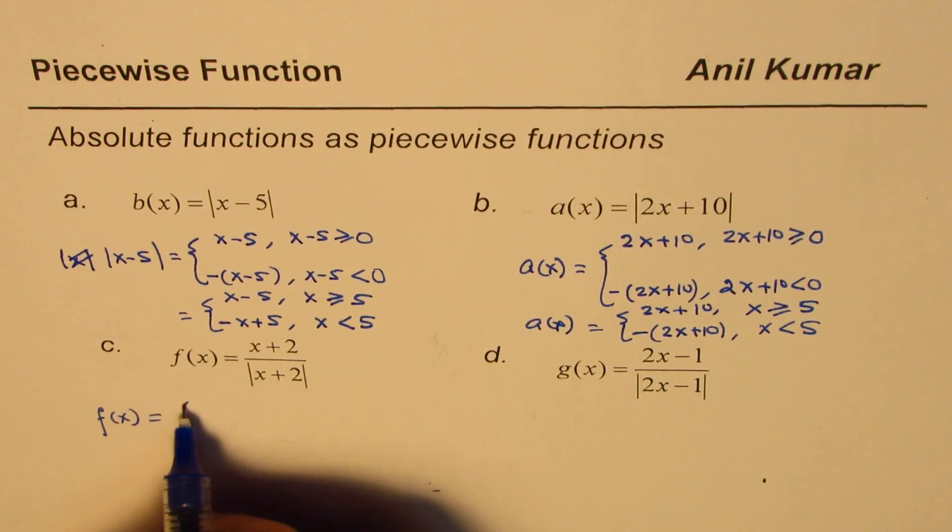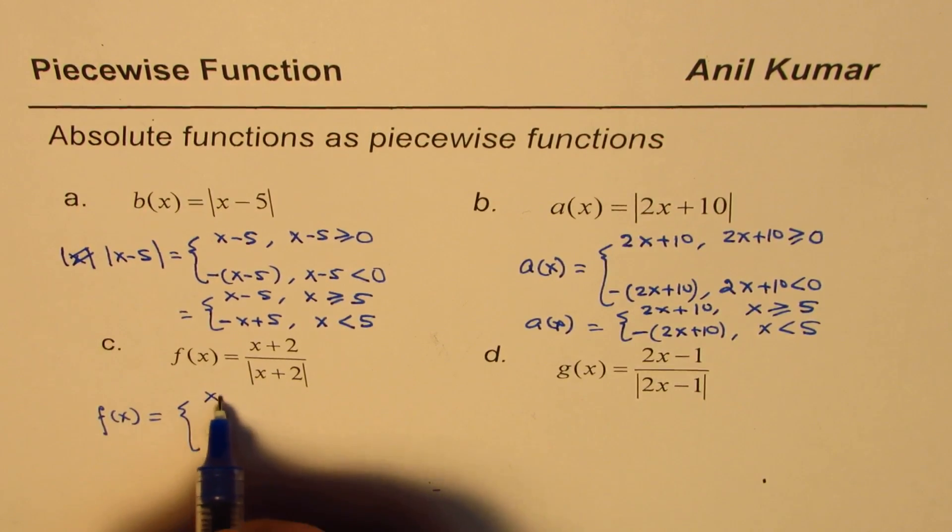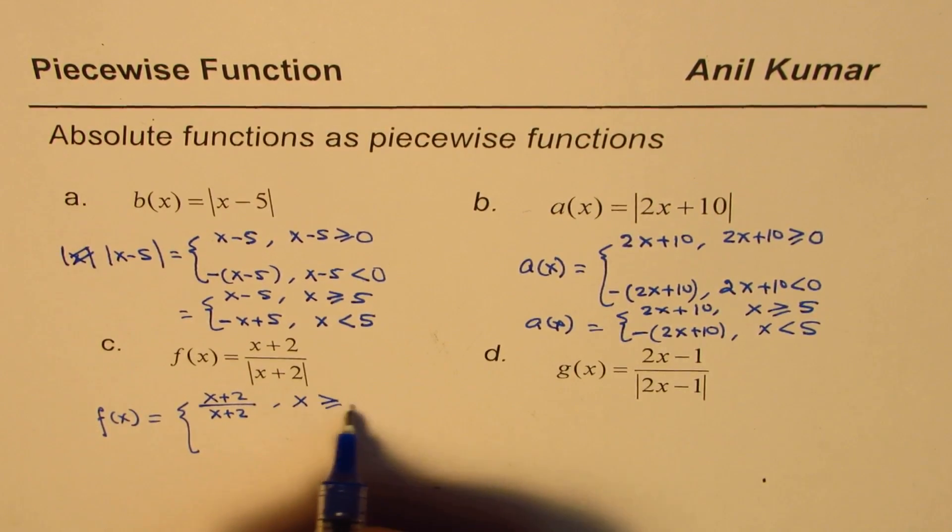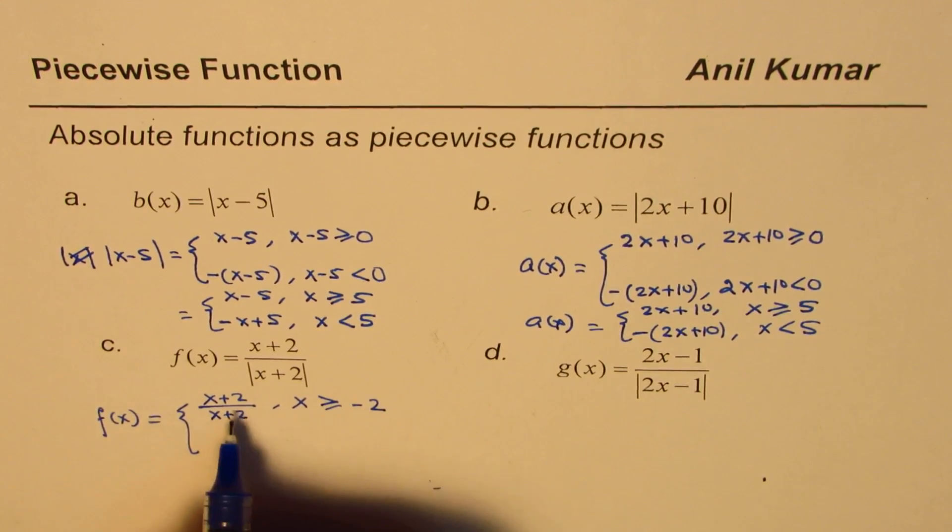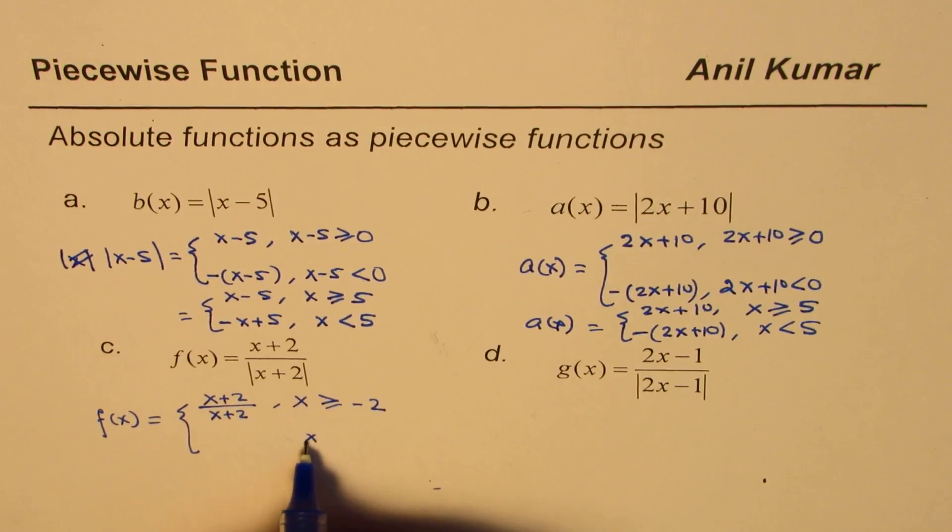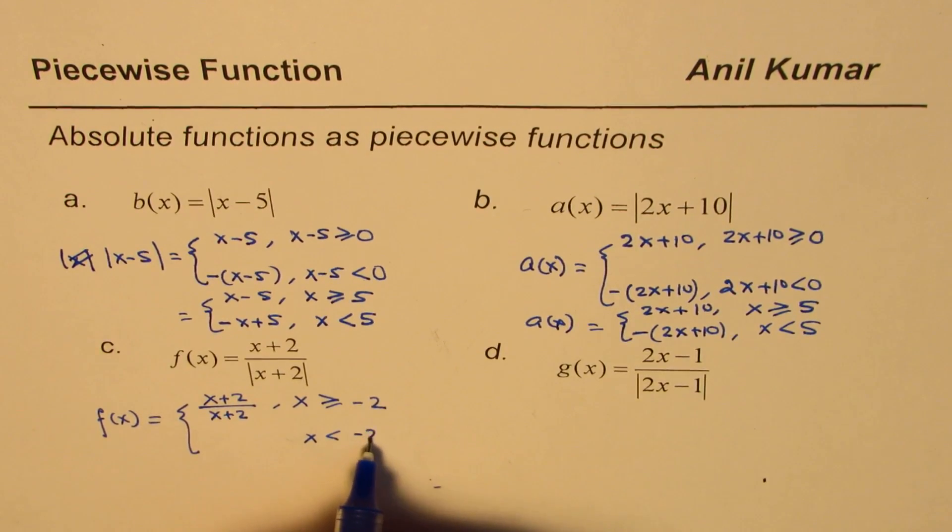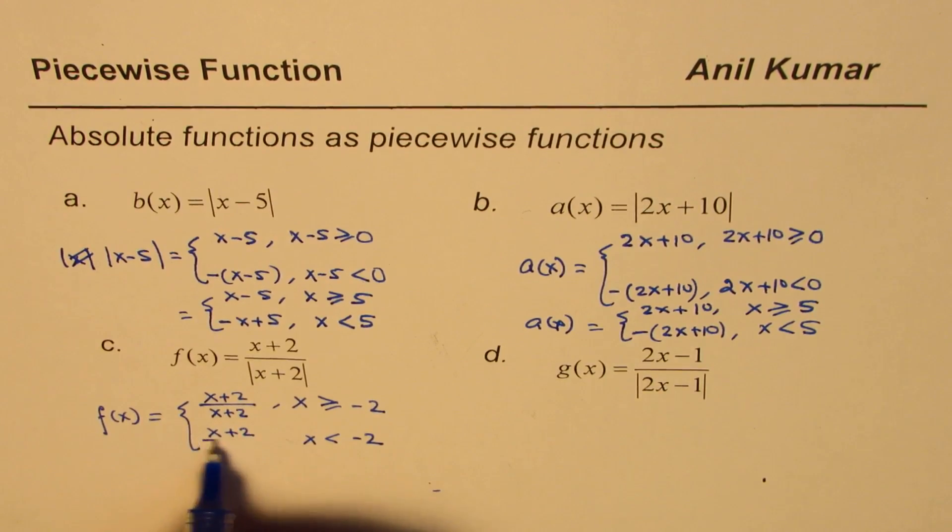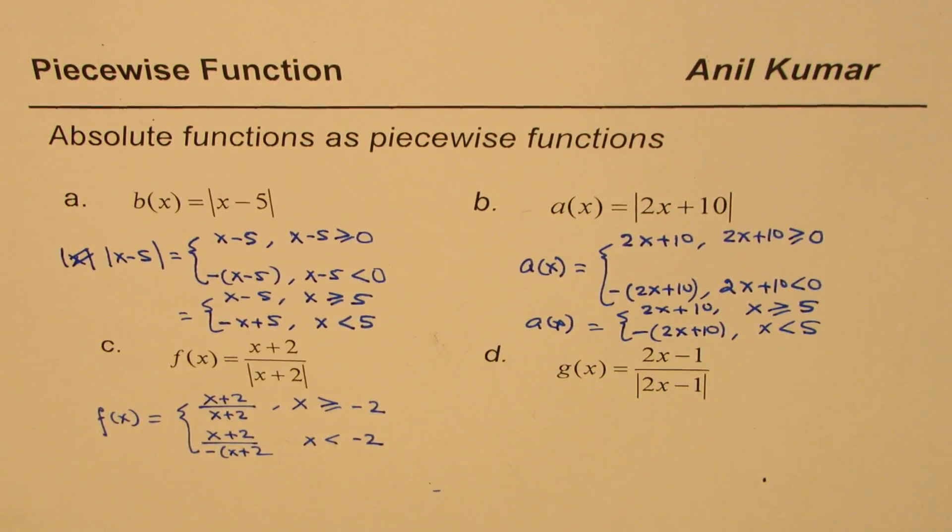So we could write this as equals to x plus 2 over x plus 2 when x is greater than equal to minus 2. However this value in the denominator will be negative when x is less than minus 2. So in that case we'll get this as x plus 2 divided by minus of x plus 2.